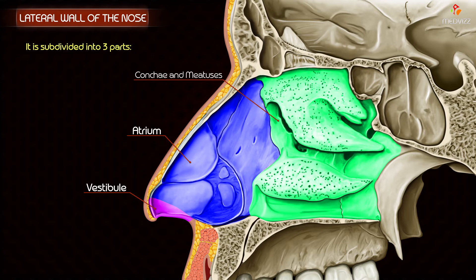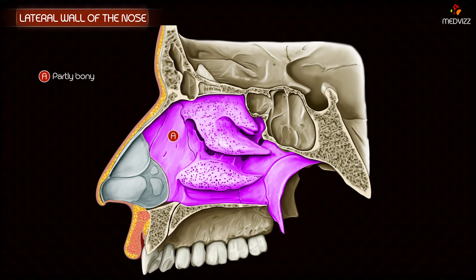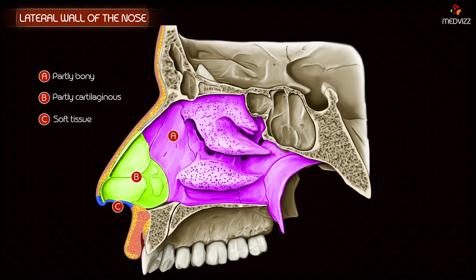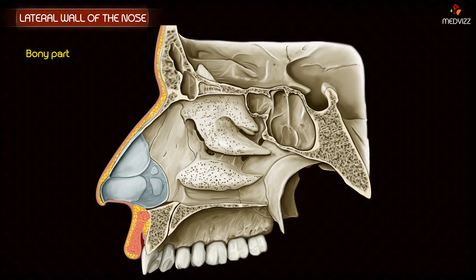The skeleton of the lateral wall is partly bony, partly cartilaginous, and partly made up of only soft tissue. The bony part is formed from before backwards by the following bones.